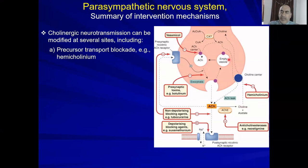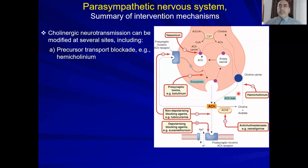In cholinergic transmission, acetylcholine enters the synaptic vesicle via a choline carrier, is stored in the synaptic vesicle, then released to act on receptors. Scientists use this information to develop drugs that can modify activity at these stages. First, precursor transport blockade: hemicholinium inhibits the choline carrier (also called carrier A), so no choline is transferred into the synaptic vesicle.